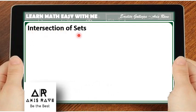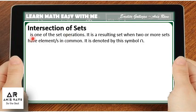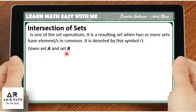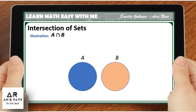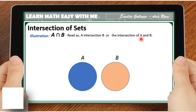We have here the intersection of sets. It is one of the set operations. It is a resulting set when two or more sets have elements in common. It is denoted by this symbol, which looks like an inverted U. Given set A and set B, let us further illustrate the two sets using the Venn diagram. This symbol is read as 'A intersection B,' or 'the intersection of A and B,' or 'the intersection of sets A and B.'